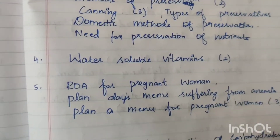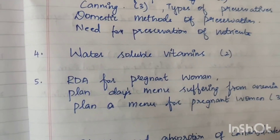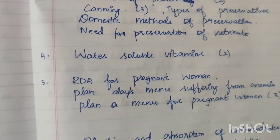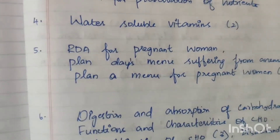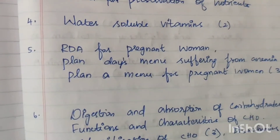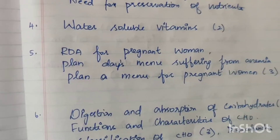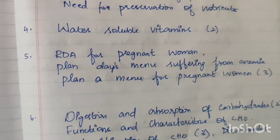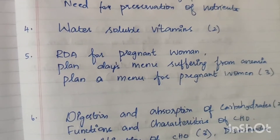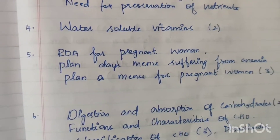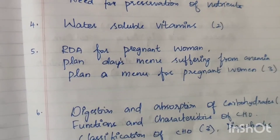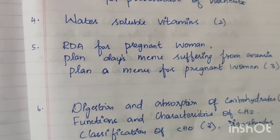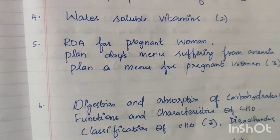4th question: Water-soluble vitamins — 2 times at 15 marks. Next: RDA for pregnant women — plan a diet for a pregnant woman suffering from anemia. This appears at 15 marks and 5 marks. Plan a menu for pregnant women — 3 times.